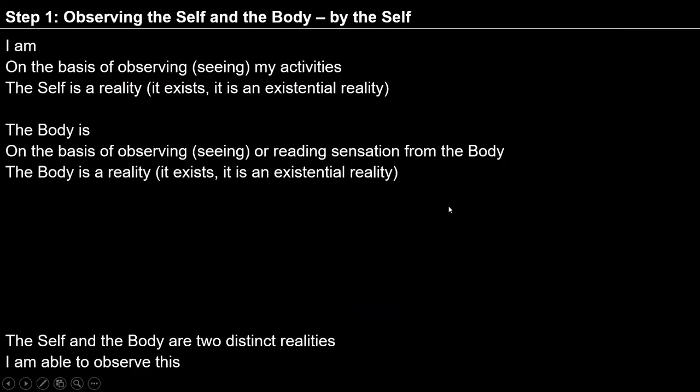In step 1, we are trying to see the body as a body — a material unit — and the self as a self — a conscious unit. These are two realities that exist distinctly and separately. The conscious unit is a reality that exists in this existence, the body is a reality, and there is a coexistence between the body and the self.